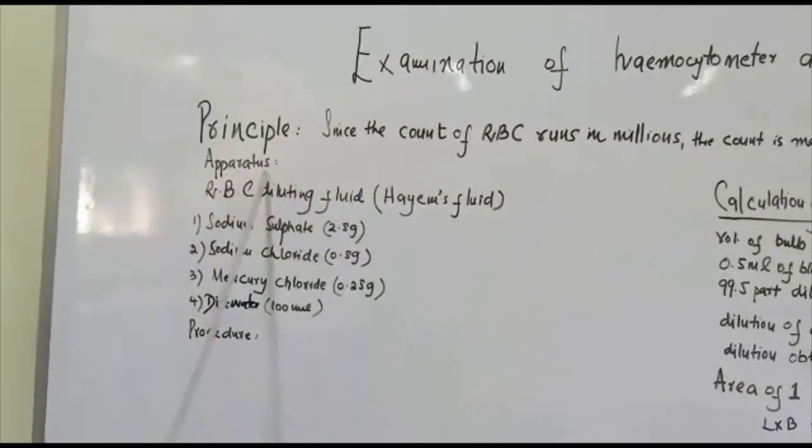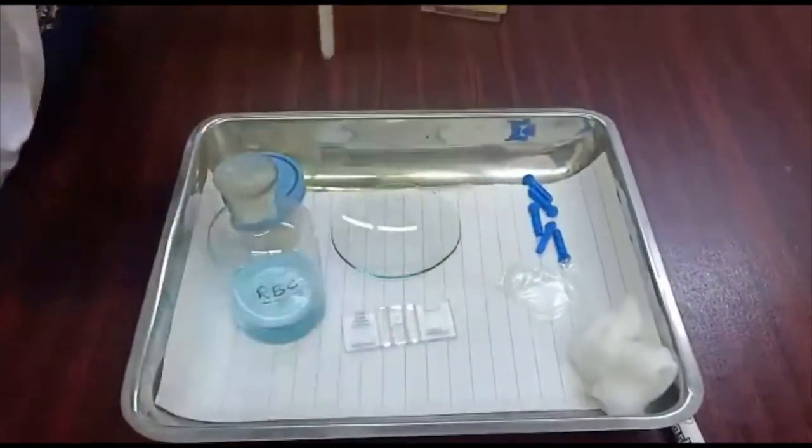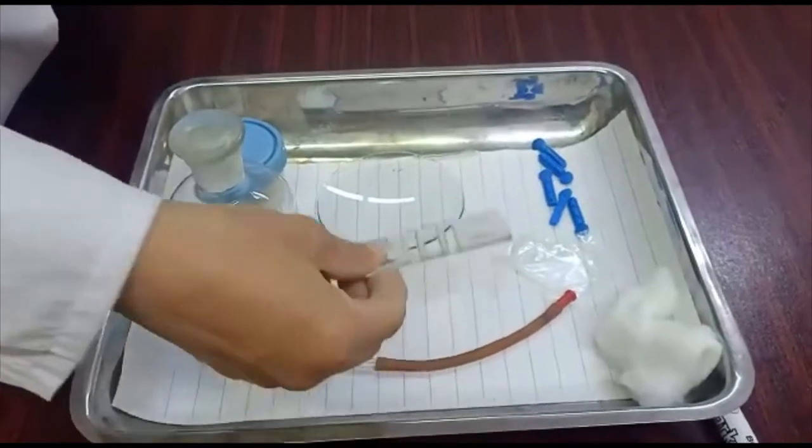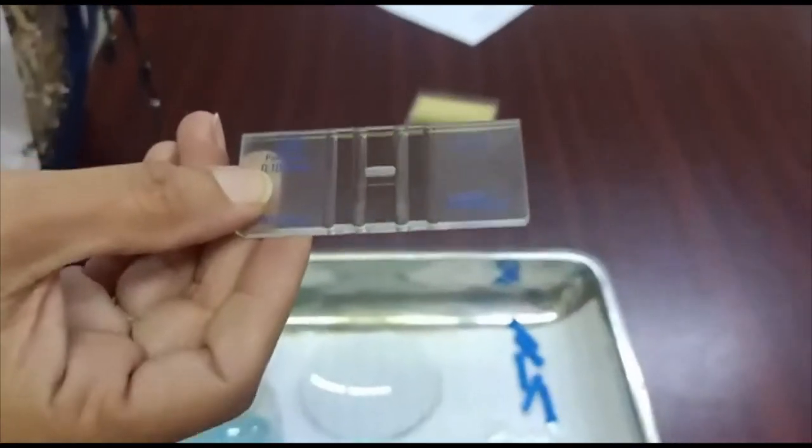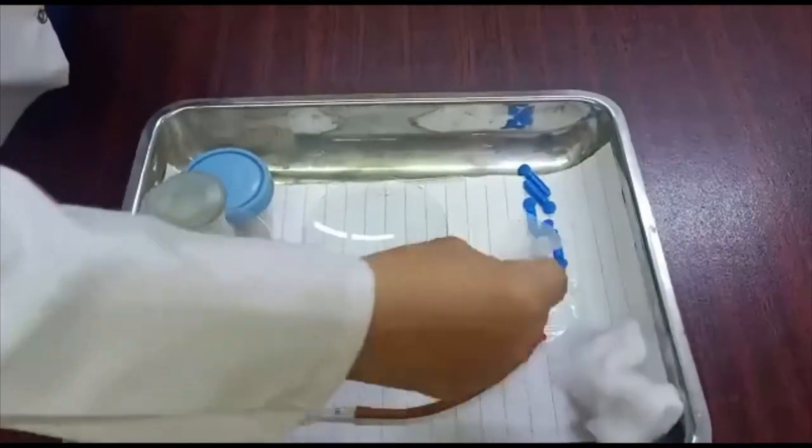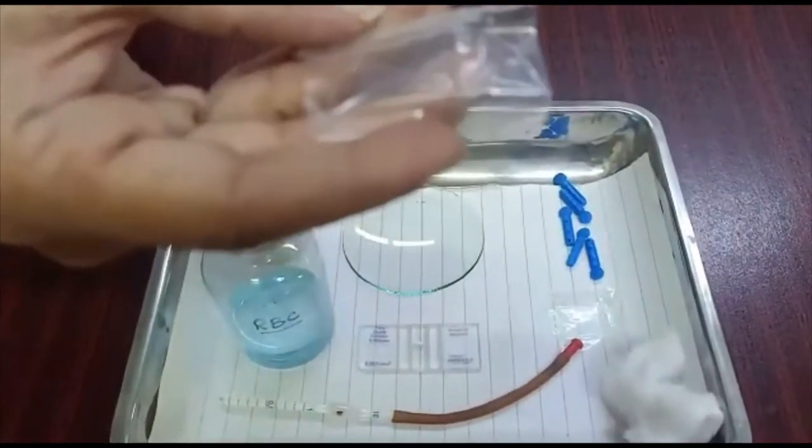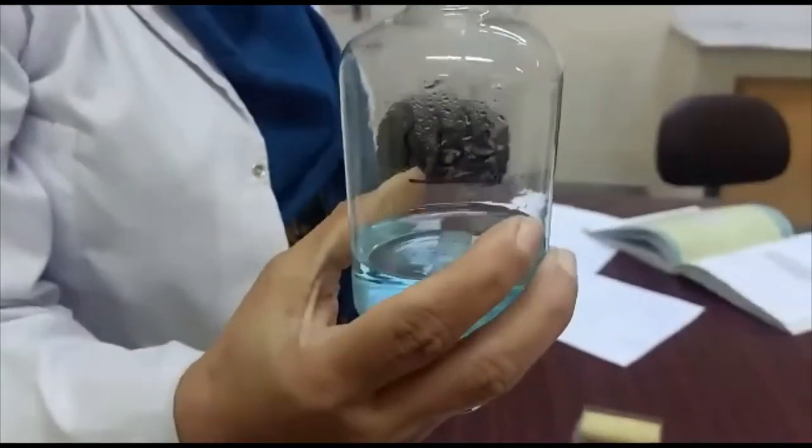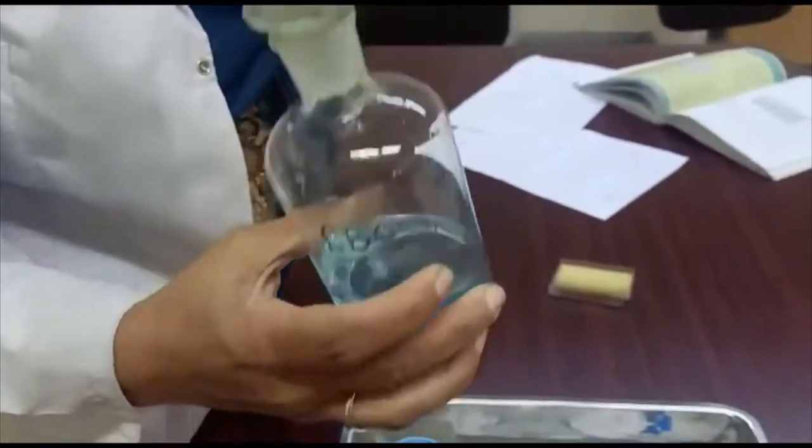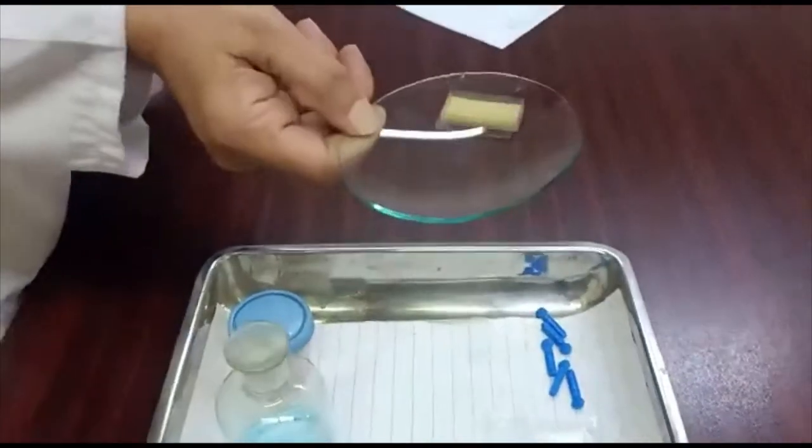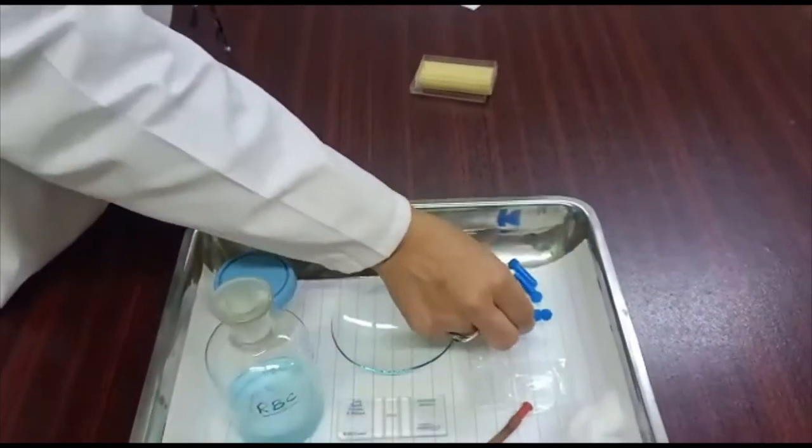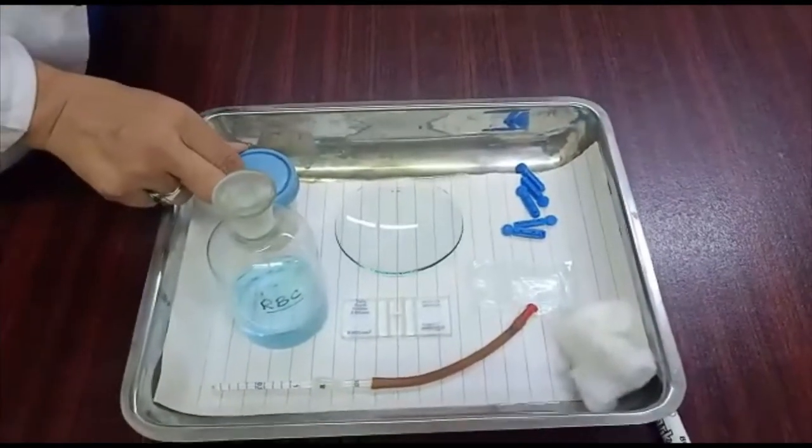The apparatus used for this practical consists of an RBC pipette, which I have already explained, a Neubauer chamber which you already know about, cover slip, diluting fluid for dilution of the sample, glass slide, disposable syringes, cotton and spirit swab, and a compound microscope.